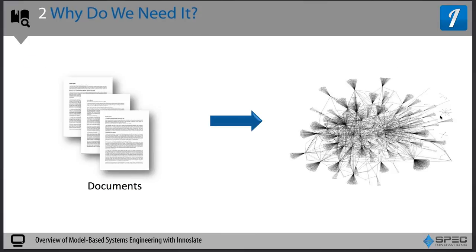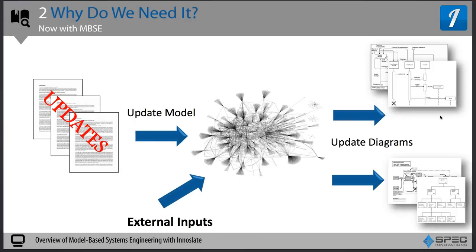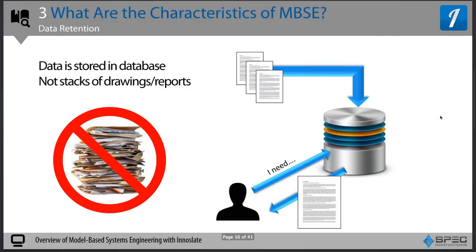With model-based systems engineering, you take your document and bring it into the model, then use the model to generate your documents — things like sequence diagrams, IDEF0, and hierarchies — all driven by the background model. As updates come in, you include them in the model and maintain traceability while capturing external inputs. You can update your diagrams while constantly keeping key traceability. You can then send off the model, get the product you're looking for, and hopefully save time and money so the overall cost is less.